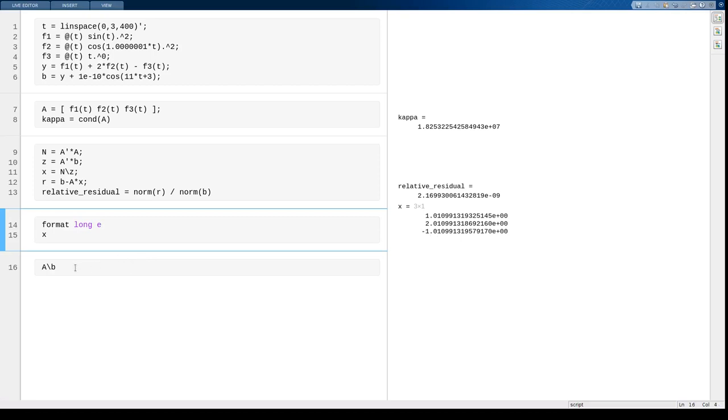Now if we compare that to the answer that MATLAB gives with the backslash, you see that they're quite different. So the normal equations, by squaring this condition number, introduce an instability. It's not able to find the solution accurately in terms of these three coefficients. This turns out to be much more accurate.